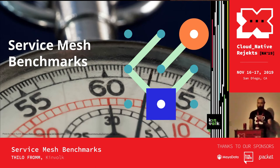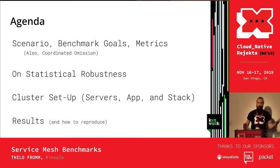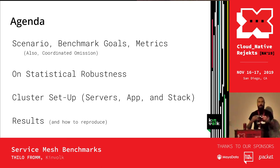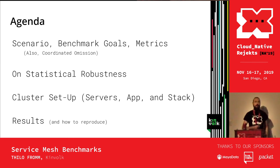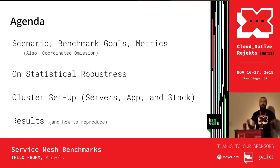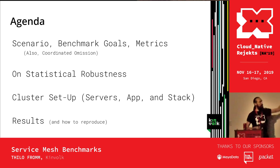This talk is about service mesh benchmarks. We'll take a look at the scenario we intended to test and map into our benchmarks — closely related to the goals we're pursuing and the metrics we used. The metrics section includes a nice excursion into coordinated omission, which I think should be used when doing latency benchmarks but currently isn't widespread. We'll also touch on statistical robustness, since we're benchmarking in a public cloud environment, and then discuss cluster setup.